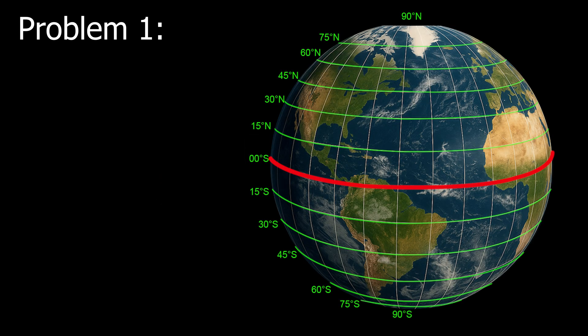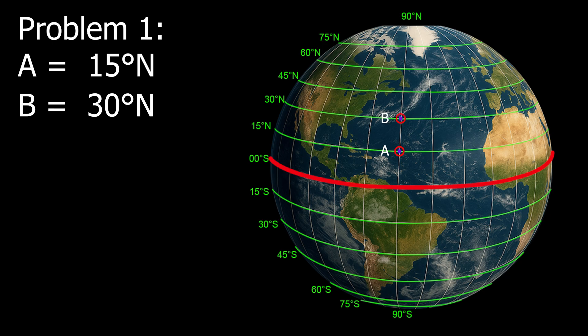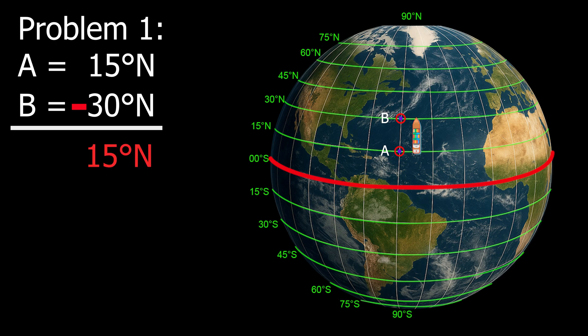Now let's answer the following examples. Example number 1: Point A, 15 degrees north. Point B, 30 degrees north. The difference is 15 degrees. The direction is north. Therefore, the D-lat is 15 degrees north.